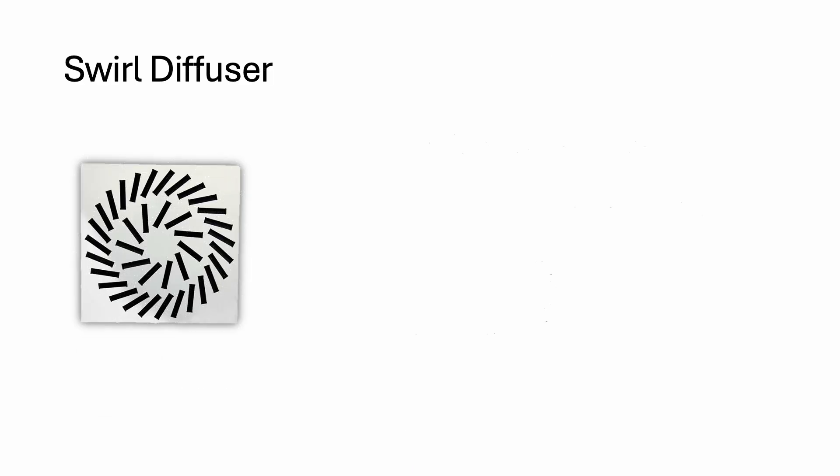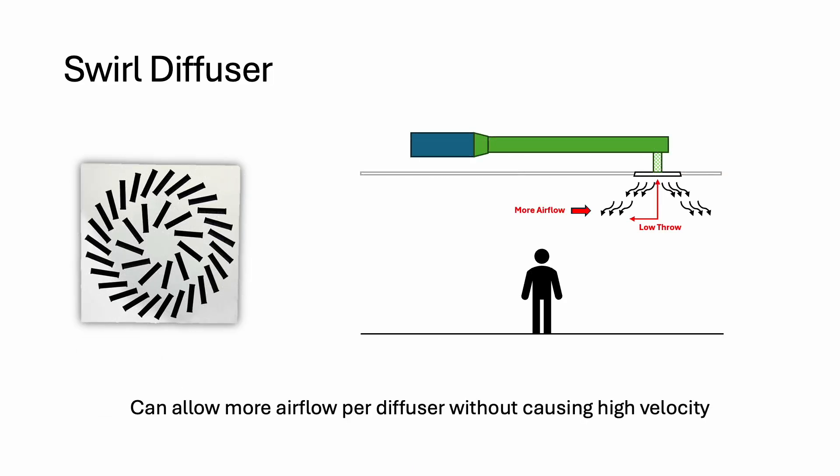As for this type of diffuser, it is known as a swirl diffuser. Its throw distance is shorter than a directional diffuser. This means we can allow more airflow per diffuser while ensuring the air reaches terminal velocity before entering the breathing zone.